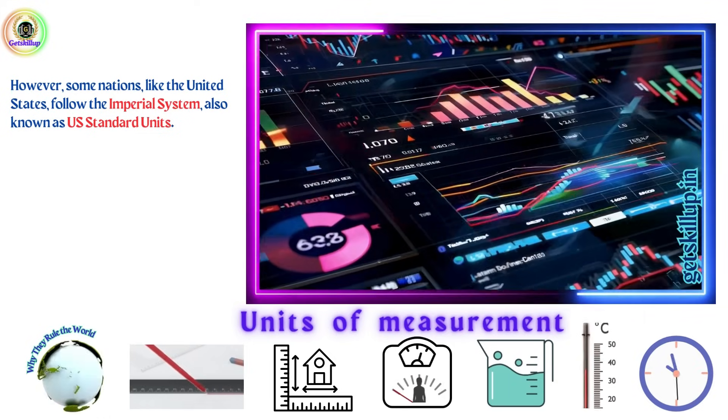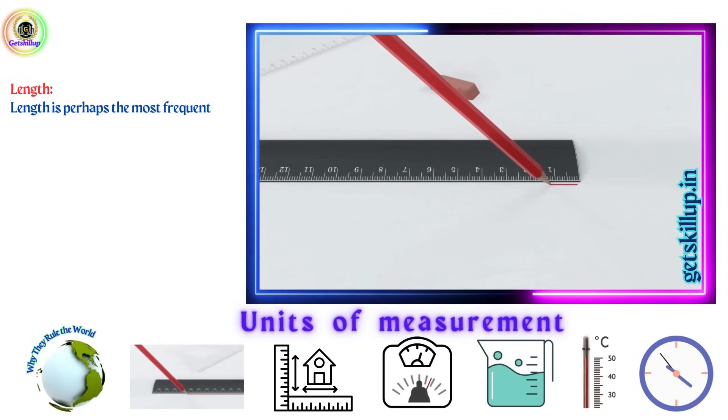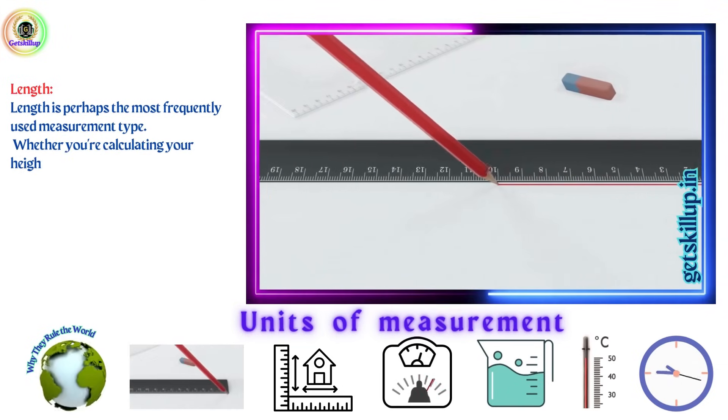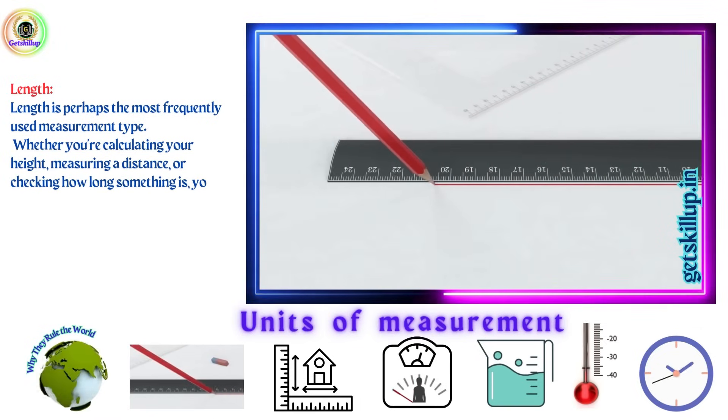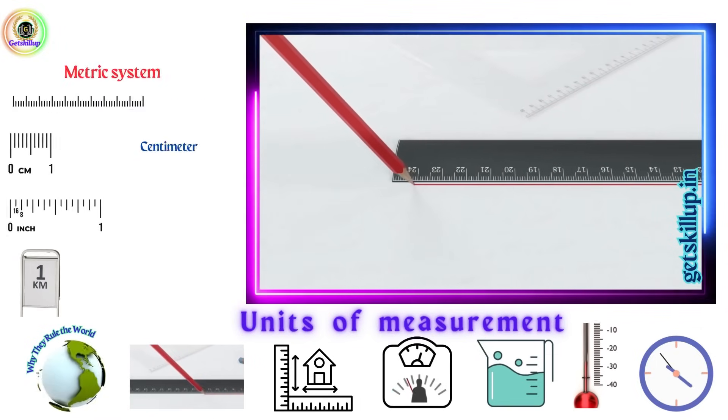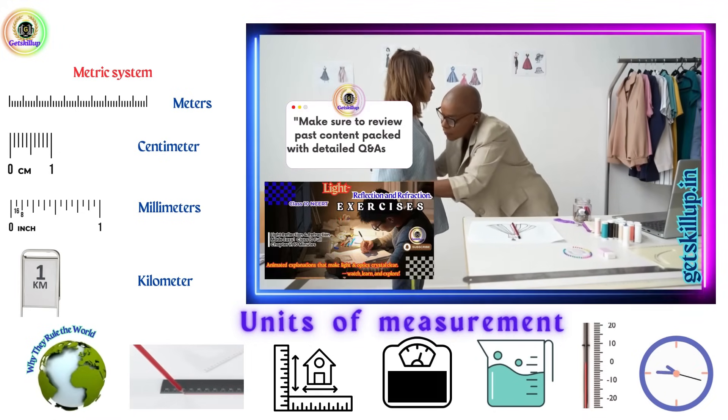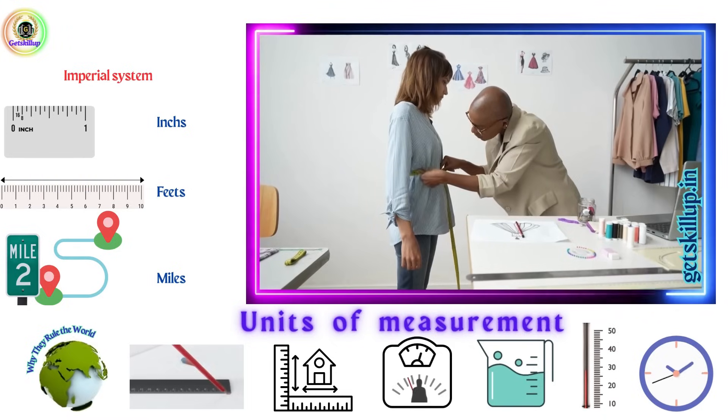Let's explore these systems starting with length. Length is perhaps the most frequently used measurement type. Whether you are calculating your height, measuring a distance, or checking how long something is, you are measuring length. In the metric system, length is measured using centimeters, meters, and kilometers. Meanwhile, the imperial system uses inches, feet, and miles for the same purpose.